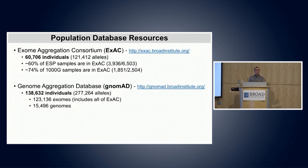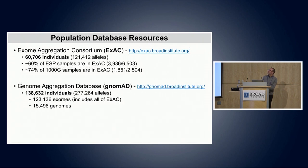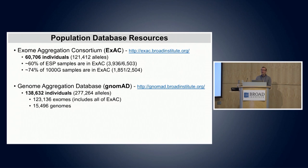For which population databases to use, most people now use gnomAD instead of ExAC. One important note: ExAC contains a large chunk of individuals from ESP and 1000 Genomes, and gnomAD includes almost everybody from ExAC. You don't want to add people across different datasets because often they are the same individuals appearing in ESP, ExAC, and gnomAD — so it's best to use just one and not assume, for example, that one count in each dataset represents five separate people when it's actually the same person.